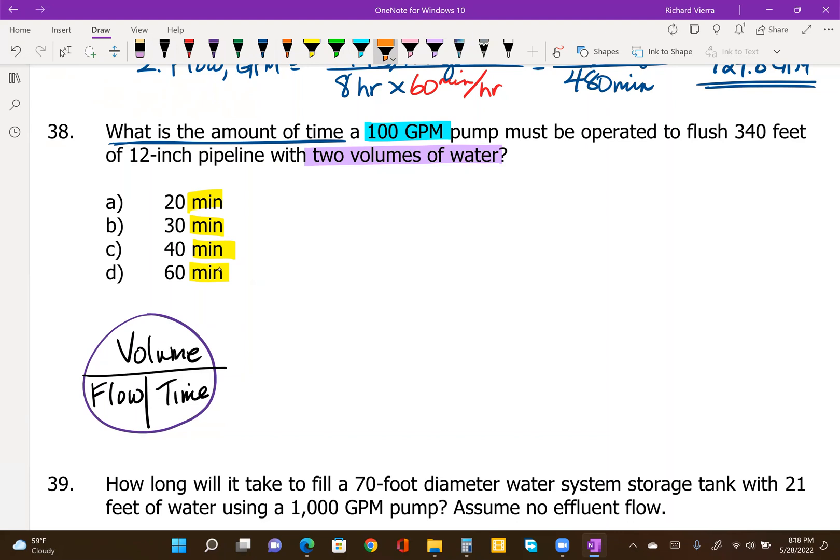So it is going to be calculated as volume over flow. Time in minutes is what we get when we take a volume of water in gallons and divide by a flow rate in gallons per minute. We do know the flow, 100 gallons a minute, but what we don't know is the volume amount that is going to be required to flush this line through twice. So this is what we have to find first before we can do the time calculation.